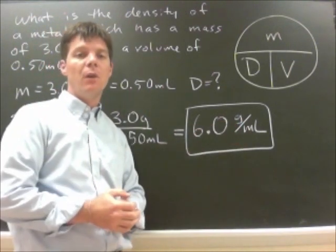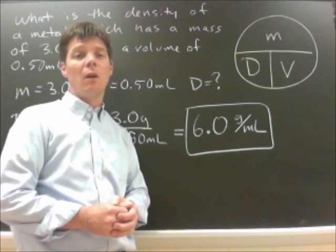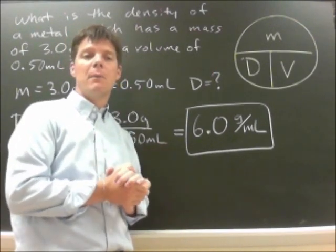Because I'm finding a density, my units should be mass over volume. I have a unit of mass, grams, divided by a unit of volume, milliliters. So again, these are my five steps that I'm using to solve any word problem in a chemistry class.